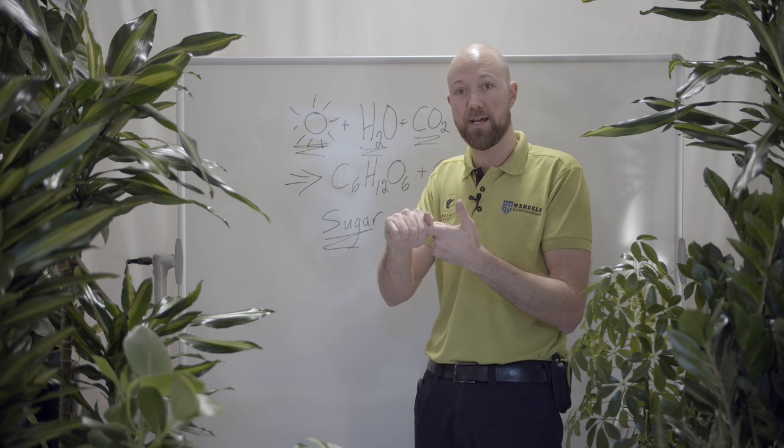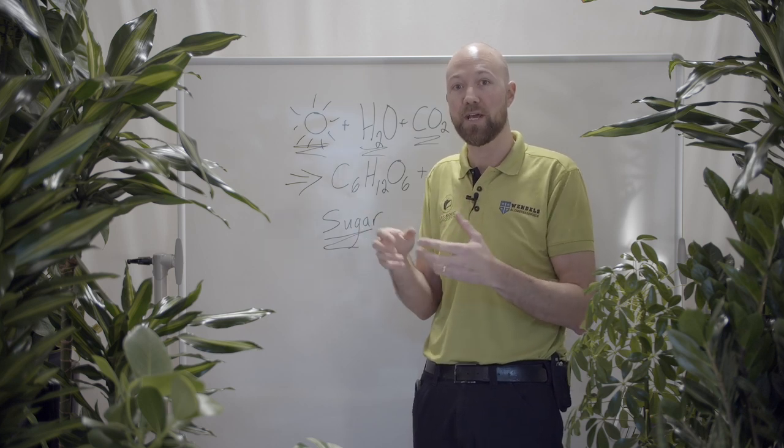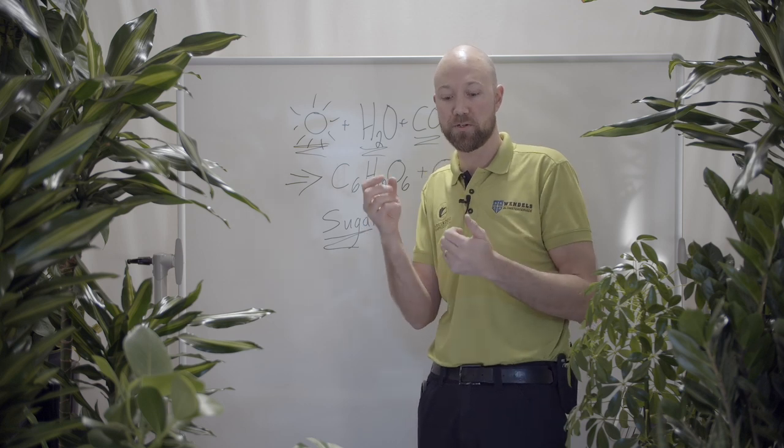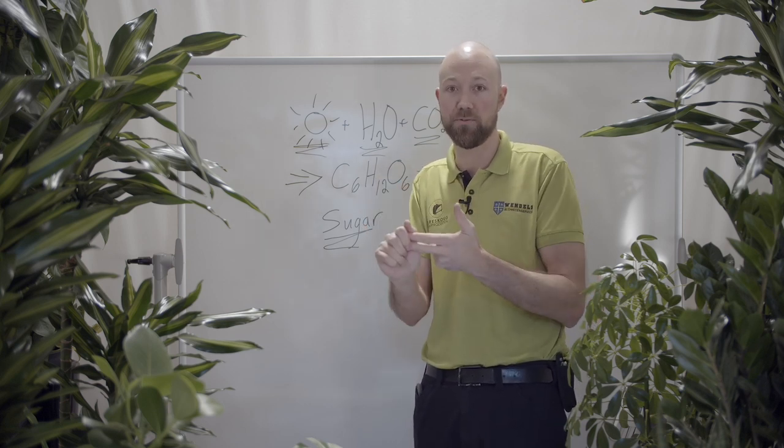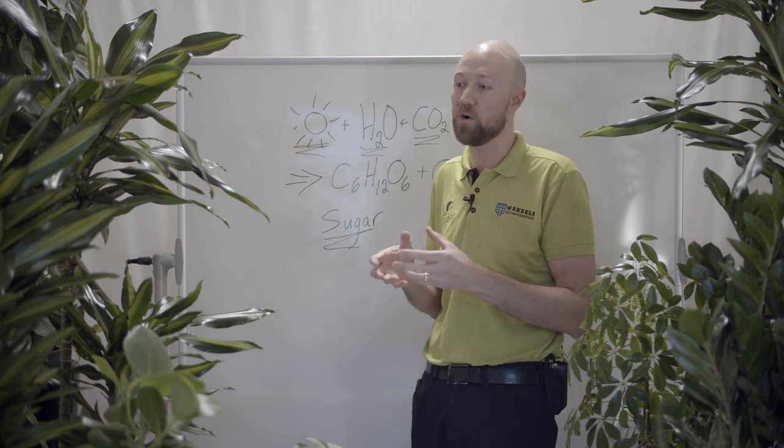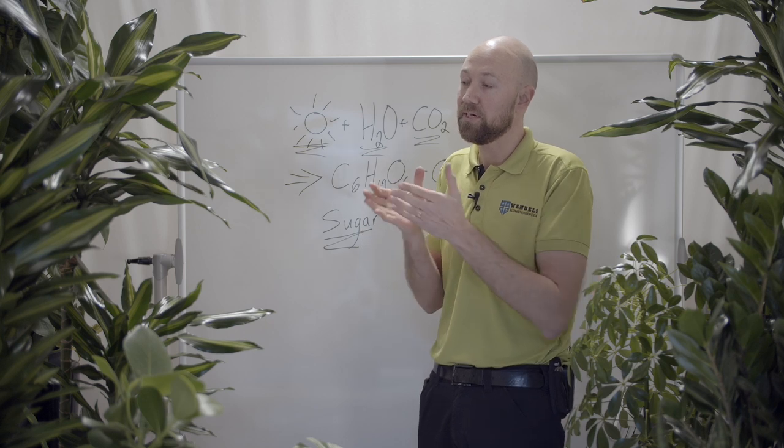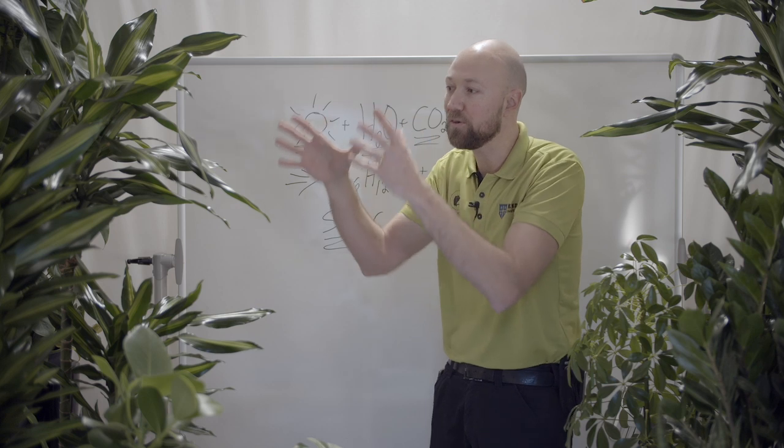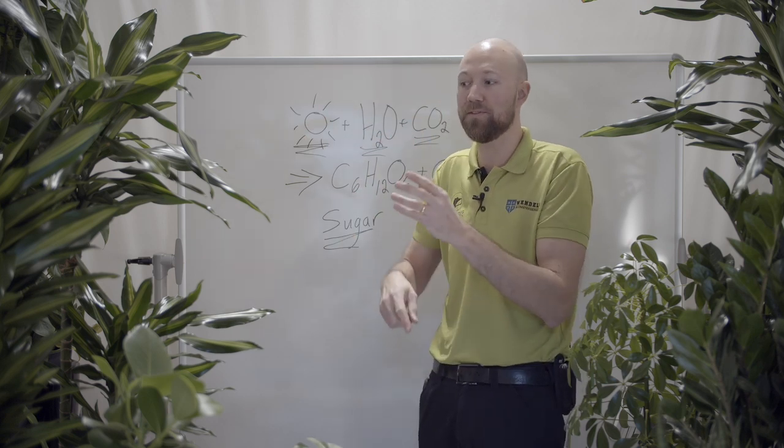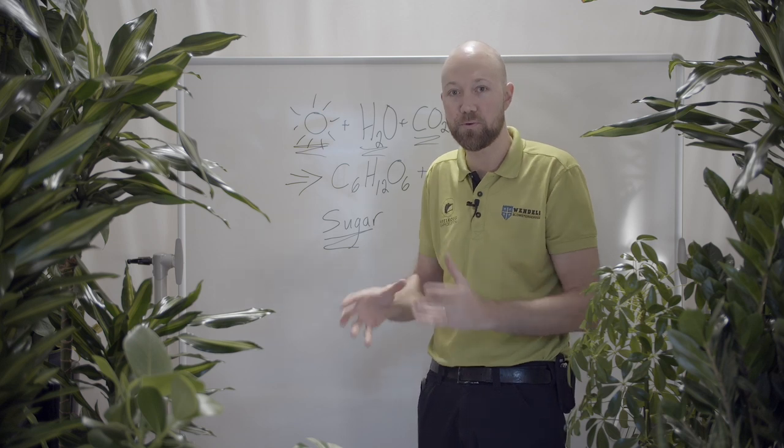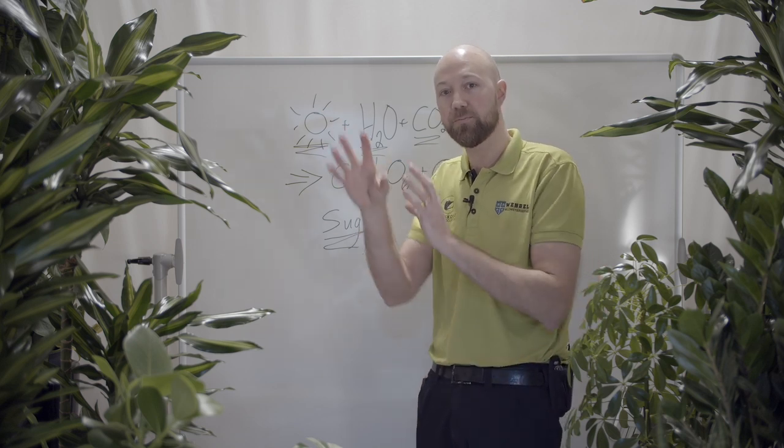The phosphorus helps the plant to create a better root system. It also helps it with creating buds, flowers and fruits. And the last thing is the potassium. The potassium works to help the plant in all stages. It helps with the highway inside of the plant. It helps with the root system. It helps a little bit everywhere.